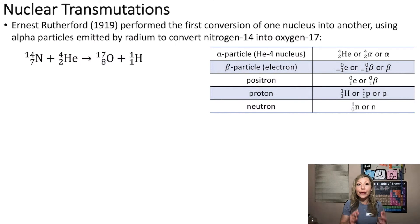So actually the first nuclear transmutation was done by Ernest Rutherford in 1919. He converted nitrogen-14 into oxygen-17 using alpha particles, and here is the reaction for the process. Now we know that we can call these particles different ways.